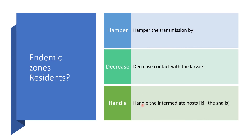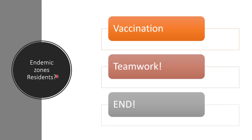The second thing we can do to inhibit transmission is to handle the intermediate host — kill all of them. Clear the palms, the pools, the lakes. Kill all the snails. Use molluscicides — chemicals such as copper sulfate. And lastly, in endemic zones, we are waiting for vaccination. It's not here yet and not working yet, but it's in the making. The world is waiting.